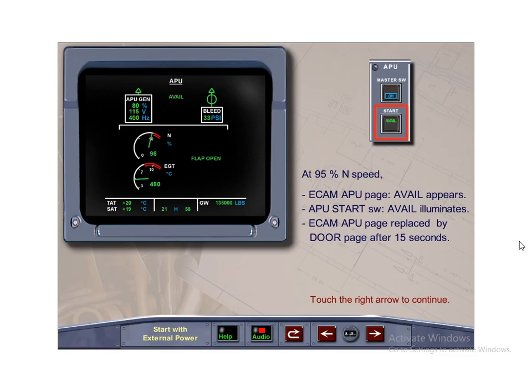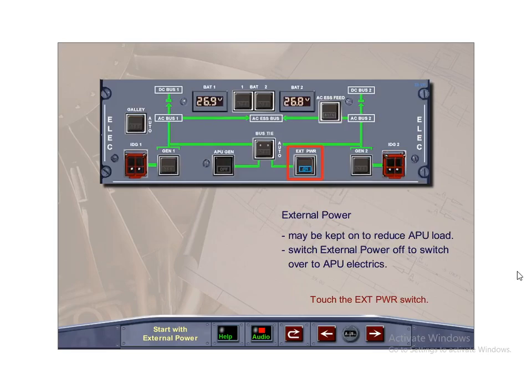At the completion of APU start, the AVAIL indication appears on the ECAM page. ON extinguishes and AVAIL illuminates on the APU start switch. After 15 seconds, the ECAM APU page will be replaced by the door page. The external power may be kept on to reduce APU load, especially in hot conditions. Switch over to APU electrics by selecting external power off no later than 10 minutes prior to departure.